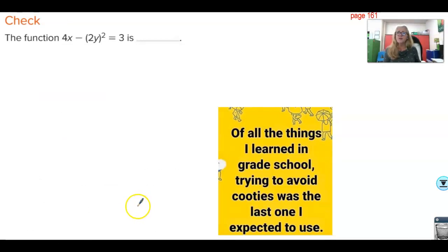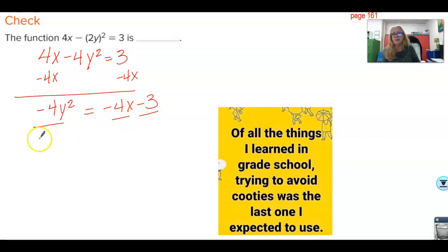Here's another one for us. Of all the things I learned in grade school, trying to avoid cooties was the last one I expected to use. We should have been avoiding those cooties better than we were. We wouldn't all be at home right now. The function 4x. This 2 distributes to both of these. This will give us minus 4y squared equals 3. Right now, I can tell you this is not a line. If we put it in y equals mx plus b format, we would have to subtract 4x from both sides. That gives us negative 4y squared equals negative 4x minus 3. I could save myself the trouble because this is not going to get any better. I'm going to have y squared equals x plus 3 fourths. This is a parabola. You cannot have x or y be to any power other than positive 1. Not a line.